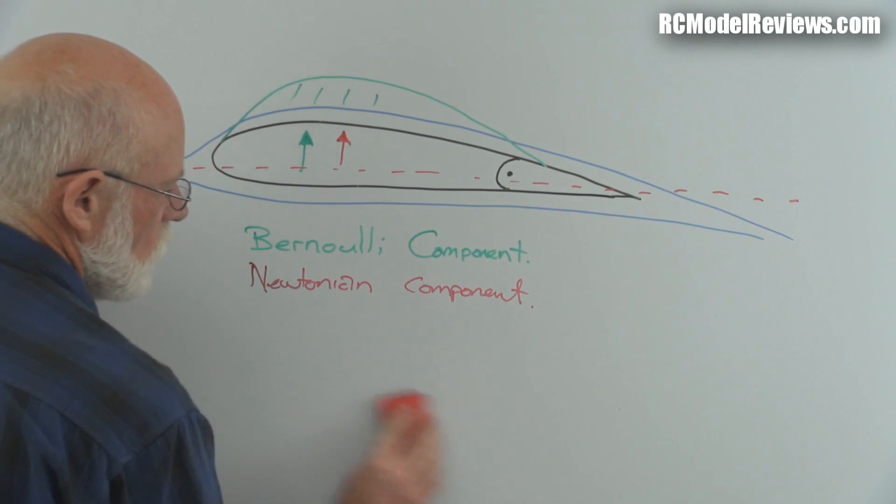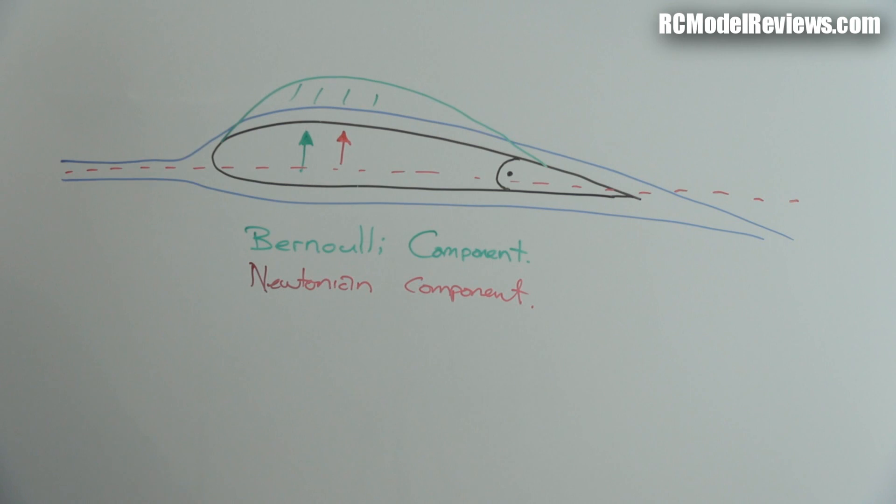So we end up with a Newtonian component to our lift, simply caused by the fact that the air has been deflected down by the wing. Simple as that. So there you go, two elements to our lift. That's on a normal wing, no flaps, just flying through the air. That's how lift works. So what we have to do now is work out, what do flaps do to all this lift? And how does it work?